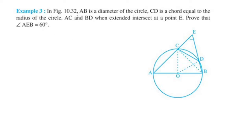In figure 10.32, AB is a diameter of the circle. CD is a chord, and CD is equal to the radius of the circle. We will join triangle COD — what is triangle COD?